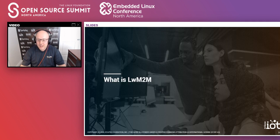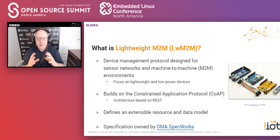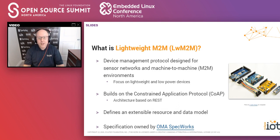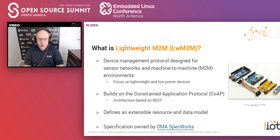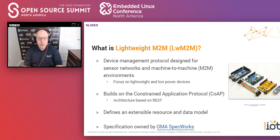So what is lightweight M2M? Essentially, lightweight M2M is a device management protocol built from the ground up for scenarios where you have sensor networks and machine-to-machine environments. It really focuses on constrained devices — devices with very weak CPUs, very little memory, that need to operate in a low-power environment. Imagine a connected building where you put sensors in the walls and the batteries are supposed to last five years. You need to manage those devices with a protocol that is really low-power, otherwise it's not economically feasible.